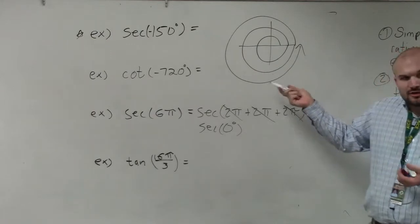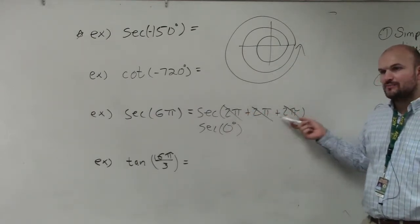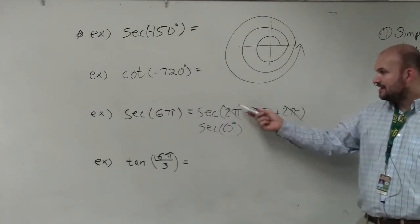So rather than graphing all these little circles, you can just eliminate those circles by rewriting your number as a sum of periods and then just cancel them out.